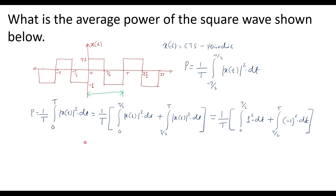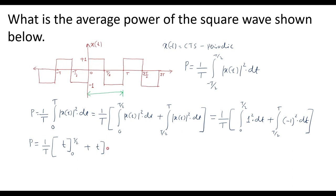Simplifying further: since 1² = 1 and (−1)² = 1, I can write P = (1/T) times the integral from 0 to T/2 of 1 dt, plus the integral from T/2 to T of 1 dt. Applying the limits, the integration of a constant gives t evaluated at the respective limits.